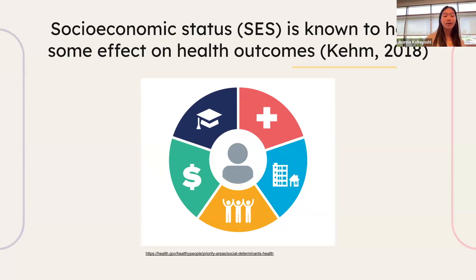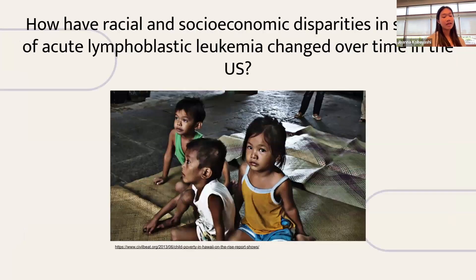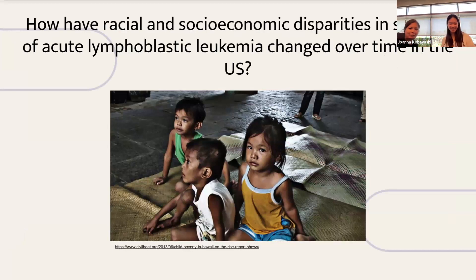For my project, I wanted to specifically take a look at childhood cancer and see how these disparities have changed with time. So my research question was: how have racial and socioeconomic disparities in survival of acute lymphoblastic leukemia changed over time in the U.S.?